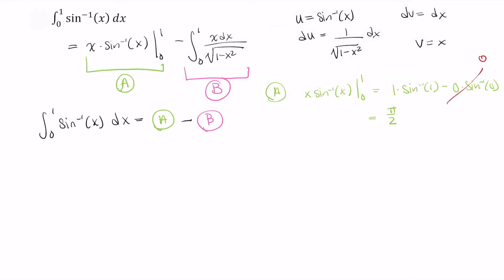All right, let's work on B now. We need to solve this using a substitution. So let w equal 1 minus x squared, then dw equals negative 2x dx, or negative 1 half dw equals x dx.